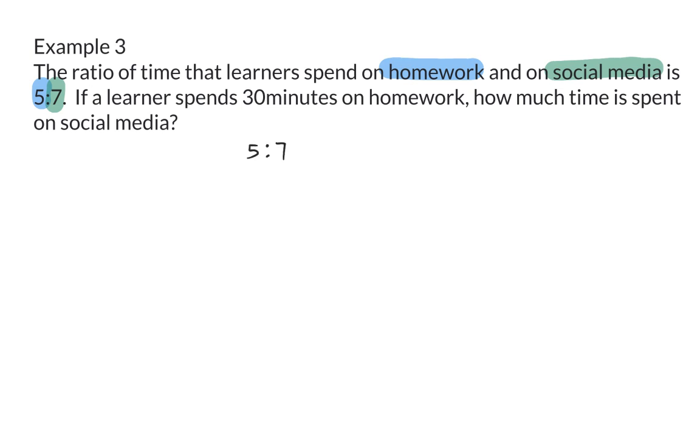This ratio of course describes the relationship between the two and doesn't necessarily give us the actual values. The actual time spent on homework is given as 30 minutes and to determine the number of minutes spent on social media we need to complete our ratio by repeating what happened on the left hand side on the right hand side as well. So we need to determine what happened for 5 to change to 30 and if you know your multiplication tables you will be able to say that 5 times 6 is 30. Therefore we need to multiply the right hand side by 6 as well and 7 times 6 will then give us 42.